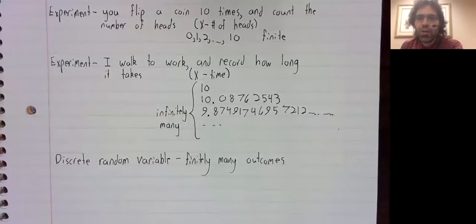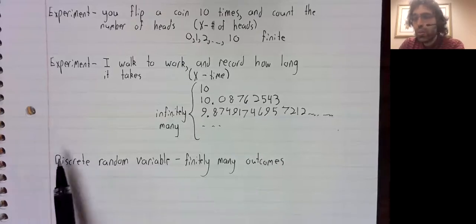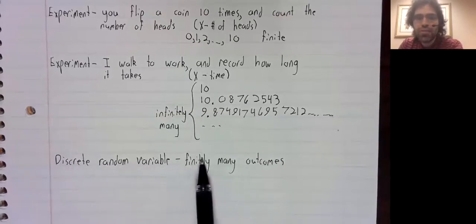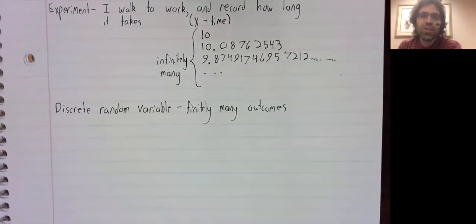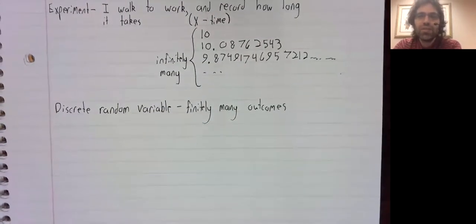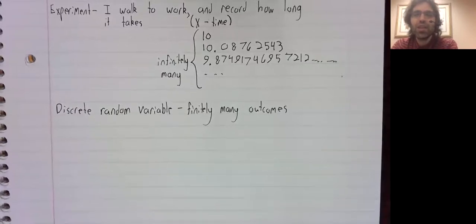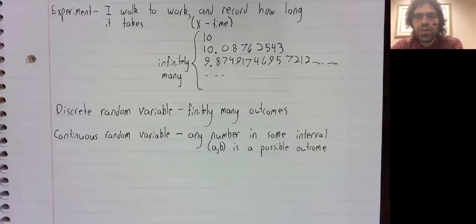However, since we're not going to use calculus for discrete random variables, it's not really important to get that definition perfectly correct. The definition we're going to actually need is this.